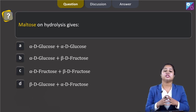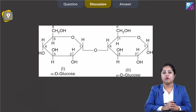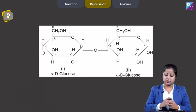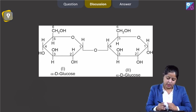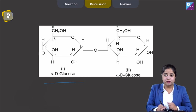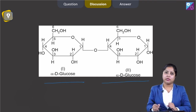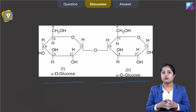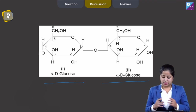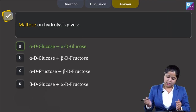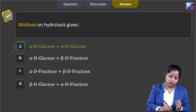Maltose is a disaccharide composed of 2 alpha-D-glucose units. In its structure, C1 of one glucose unit makes a glycosidic linkage with C4 of the other glucose unit. Therefore, maltose on hydrolysis gives 2 alpha-D-glucose units, and the correct answer is option number A.